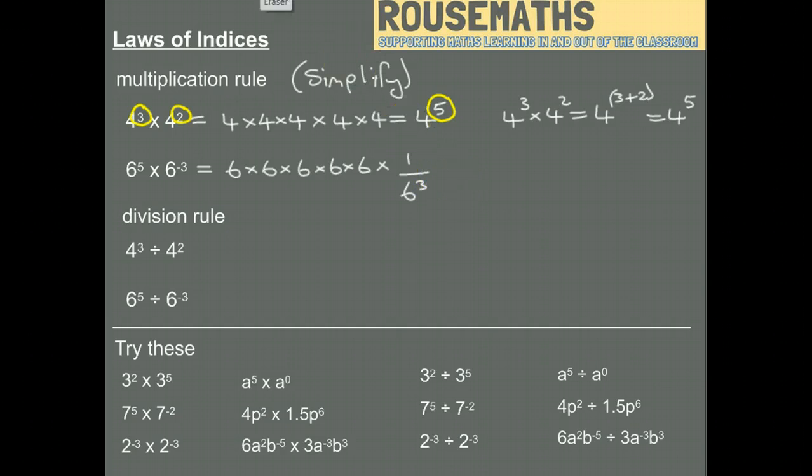If you think back to the previous video, 6 to the minus 3 is the same as 1 over 6 to the power of 3. What I'm going to do is rewrite 6 to the power 3 as 6 times 6 times 6. Just extend that fraction there.